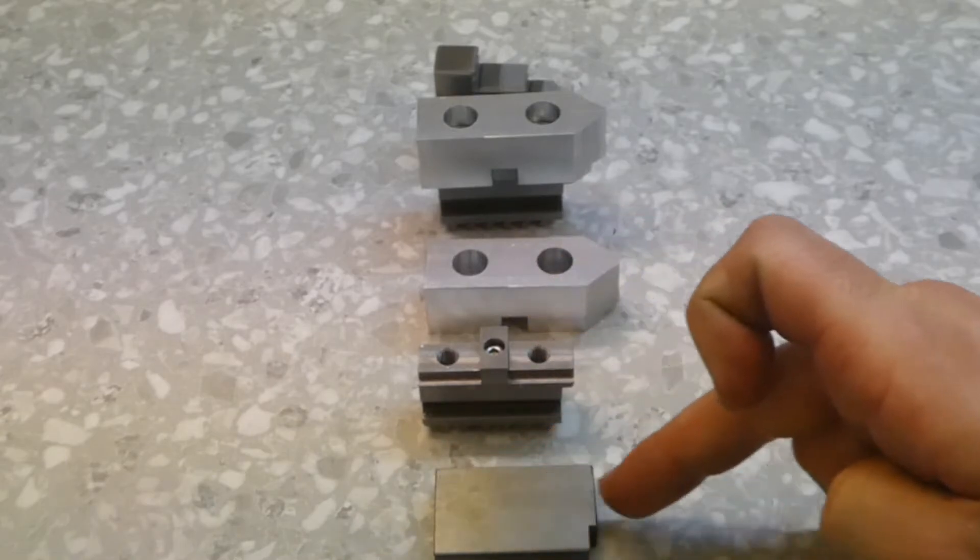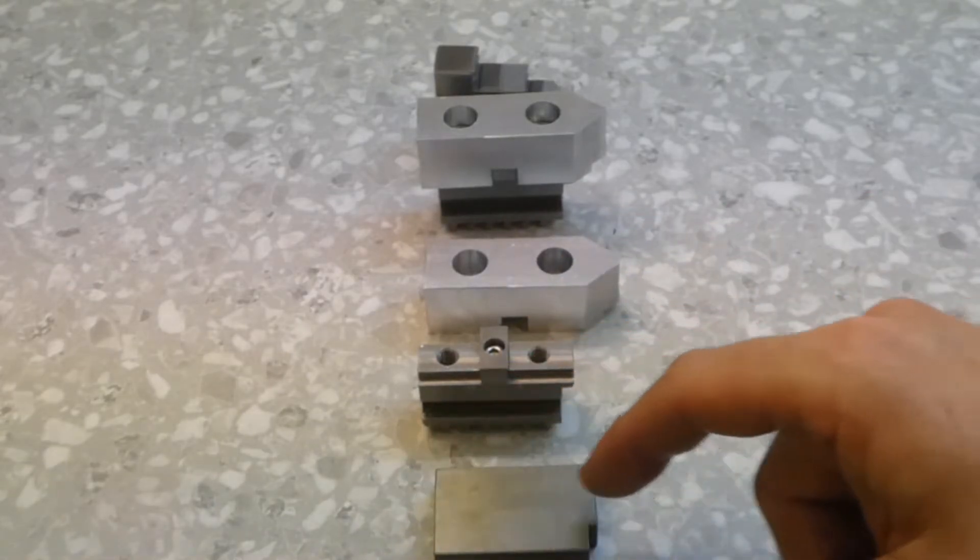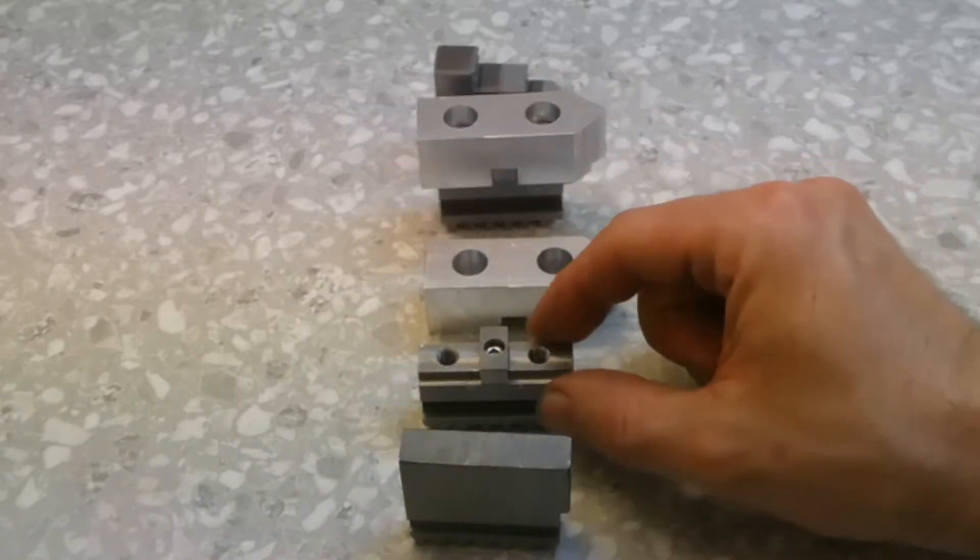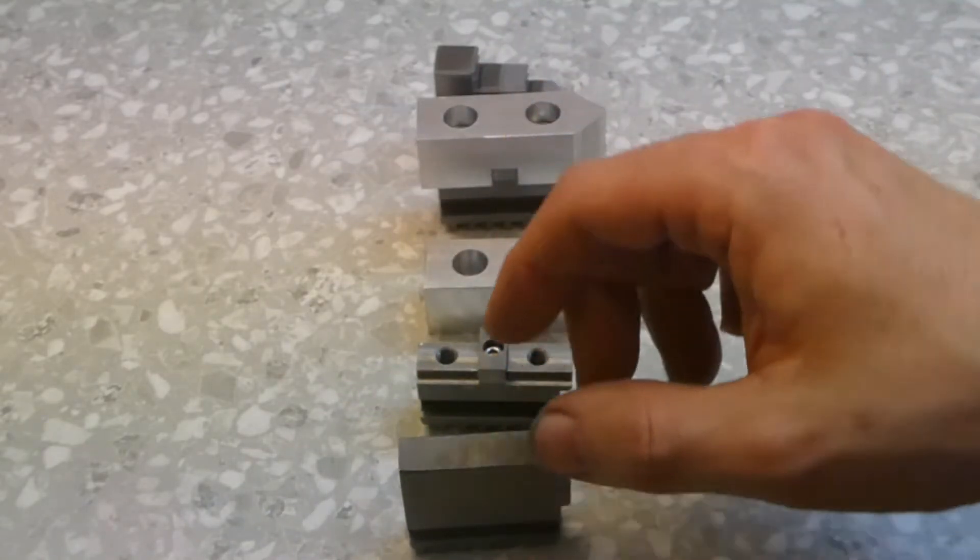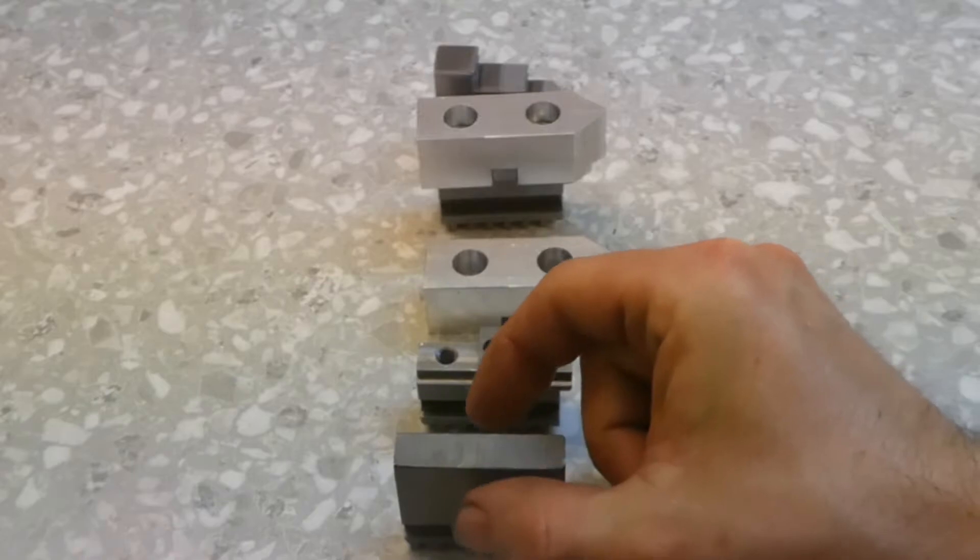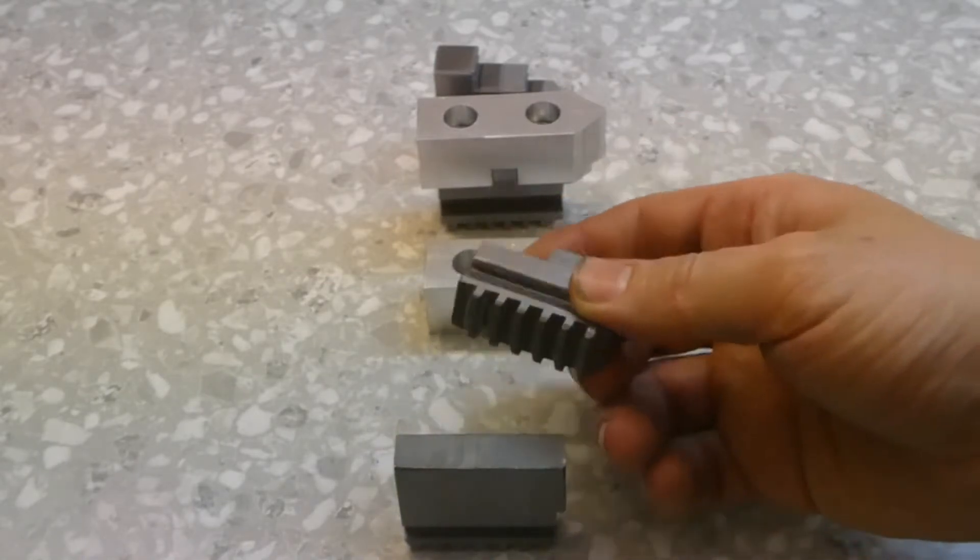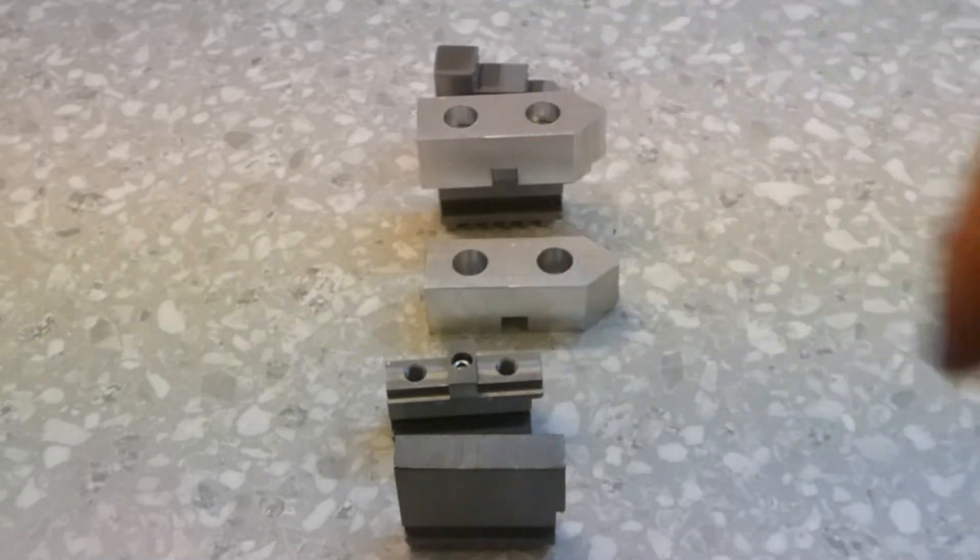You just need to cut the soft jaw in this way, mill the top, and take the taster or, yeah, it doesn't matter. But take the measure and mill a bit here, a bit here, and you will have this shape. And now we will continue with this video.